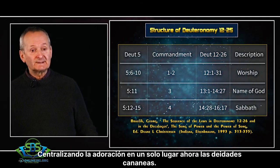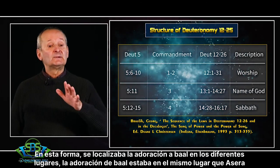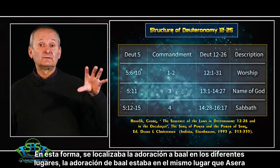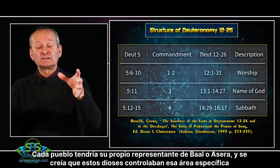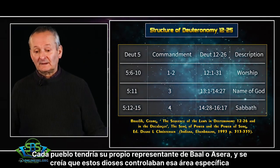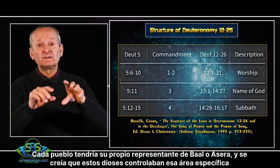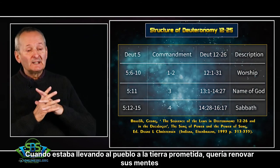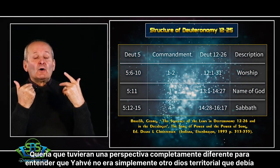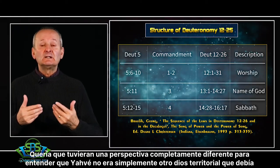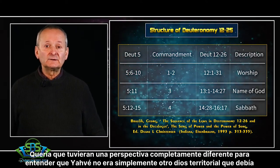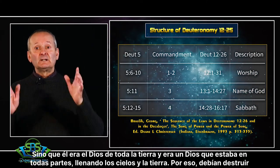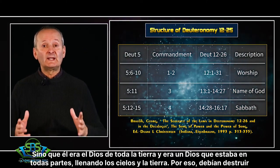The Canaanite deities were localized. They worshipped Baal, but Baal was localized into many different places, and the same with the Ashteroth worship. Each town would have their own representative of Baal or Ashteroth, and the thinking was that these gods controlled that particular area. God, when bringing his people into the promised land, wanted to renew their minds — to understand that Yahweh was not another localized god to be put alongside the others, but rather he was the God of the whole earth who fills all the heavens and the earth.